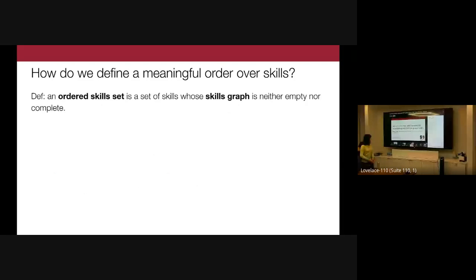Not all skills graphs give meaningful orders. If two skills are completely unrelated, the ordering won't matter. If they're essentially identical or IID-sampled groupings, order doesn't matter either. We therefore define an ordered skill set as a set of skills whose skills graph is neither empty nor complete — delineating a regime where there is sufficient asymmetry across skills to be exploited during training. This doesn't necessarily have to be a DAG, but must have some DAG-like structure.